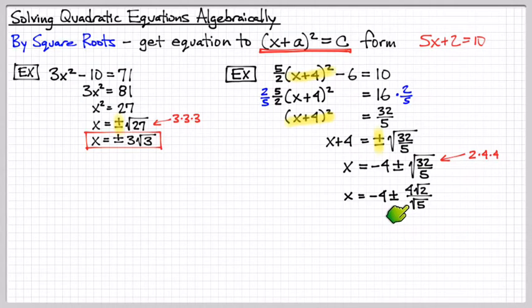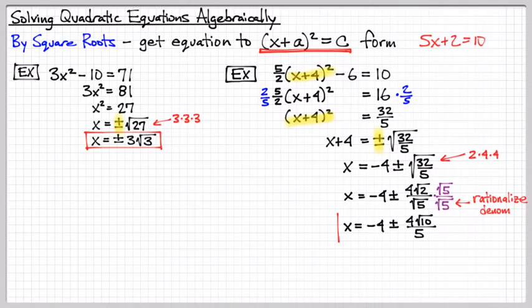So we change the root 32 into 4 root 2. And now we're going to get rid of the root 5 from the bottom by multiplying. We're going to rationalize the denominator by multiplying by square root of 5 over square root of 5. So now the bottom part, square root of 5 times square root of 5, that becomes 5. And then the top portion becomes root 10. So this is our final answer.